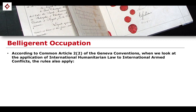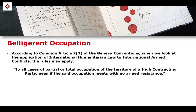According to Common Article 2.2 of the Geneva Conventions, when we look at the application of international humanitarian law to an international armed conflict, these rules will also apply to all cases of partial or total occupation of the territory of a high contracting party, even if the said occupation meets with no armed resistance.